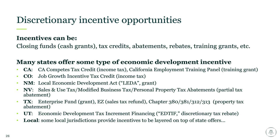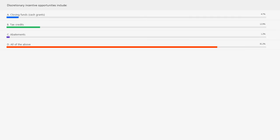Our second polling question: discretionary incentive opportunities include A, closing funds and cash grants; B, tax credits; C, abatements; or D, all of the above. The correct answer is D — all of the above. They can cover multiple types of incentives: tax credits, abatements, and closing funds are all correct, but all of the above is most correct.